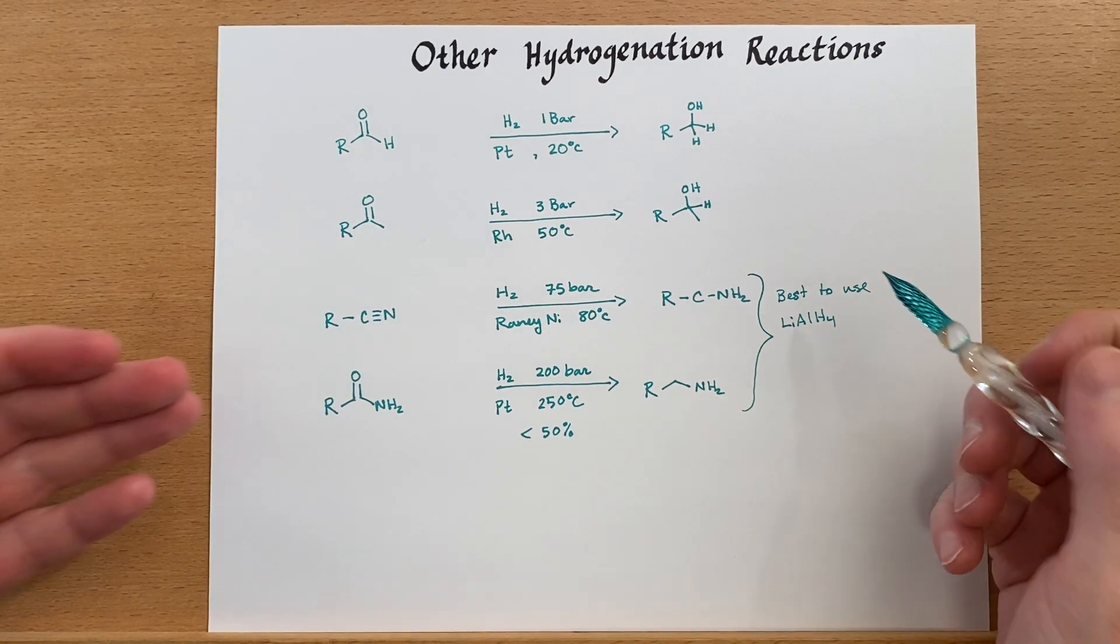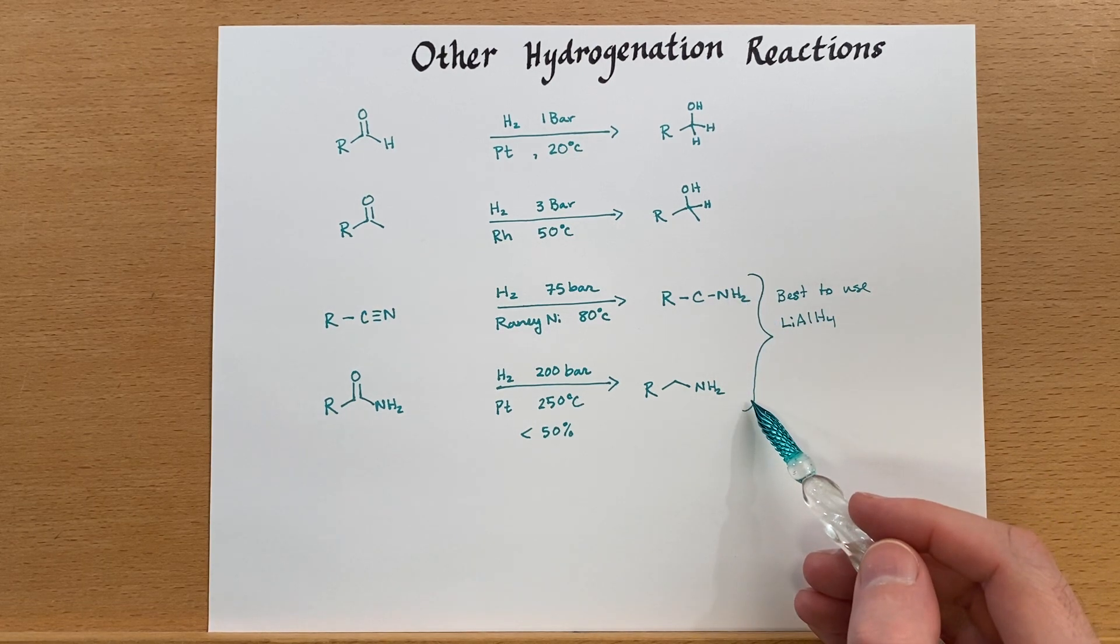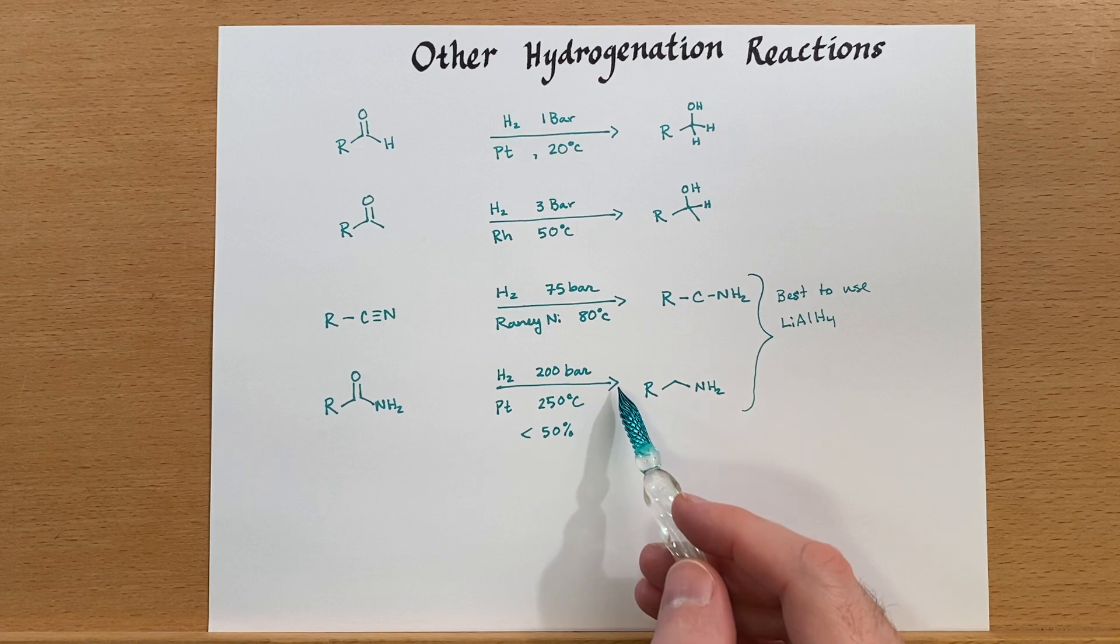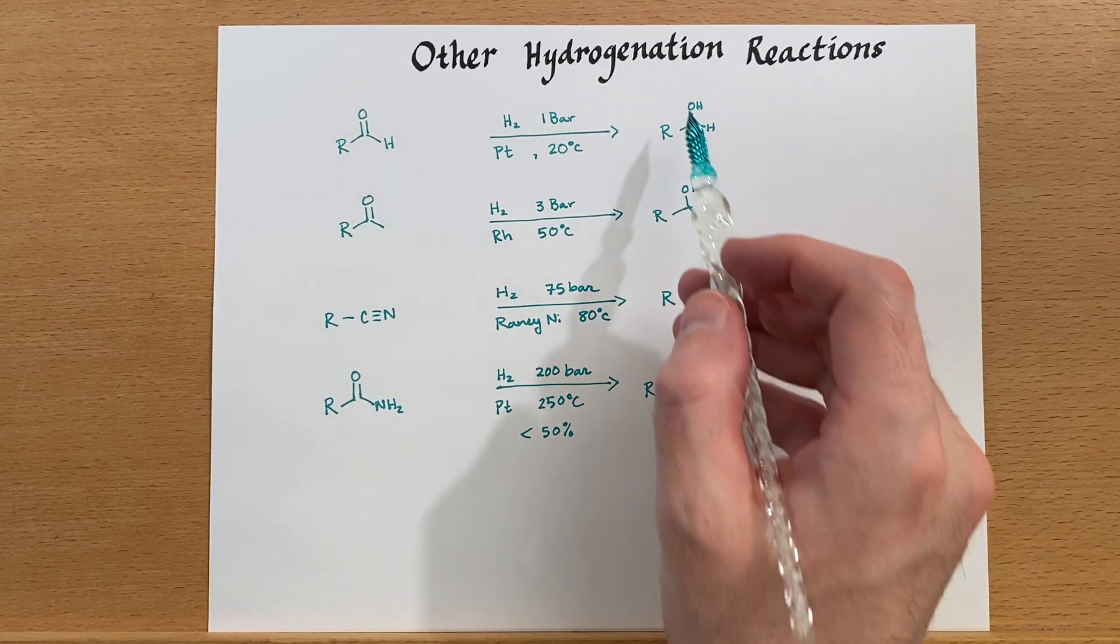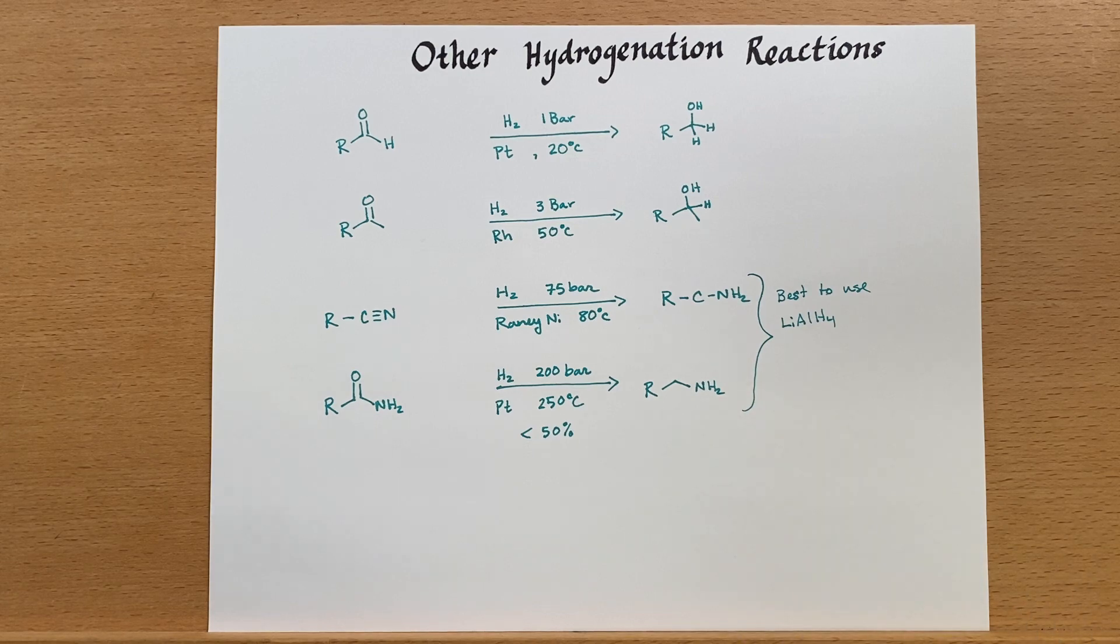So while we may need to prefer lithium aluminum hydride in some cases because these conditions are very difficult to achieve and also produce poor yields, in other cases we may prefer the hydrogenation, especially when producing a lot of products.